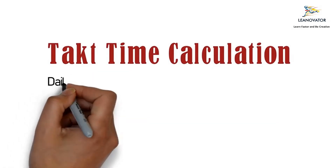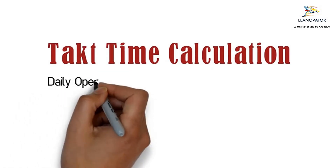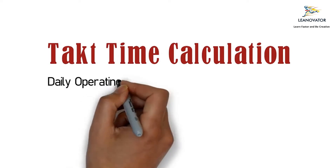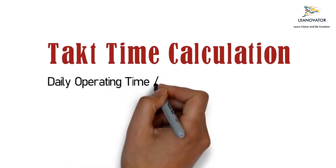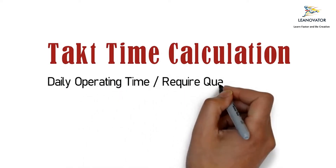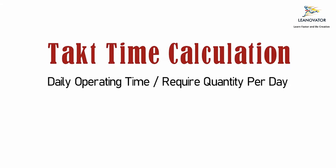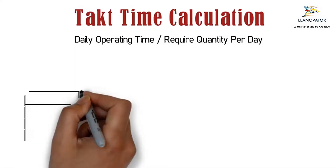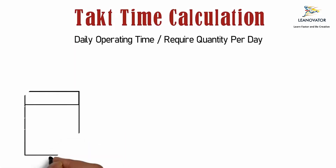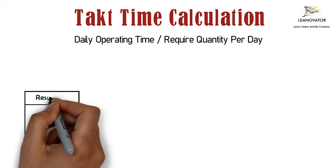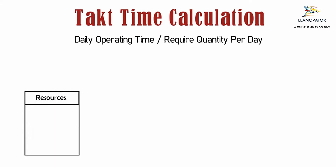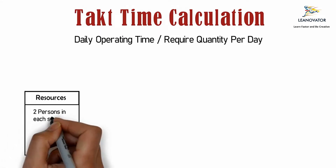The formula to calculate takt time is available time over required units, or customer demand. Takt time allows us to set a baseline in which to set a level and reliable expectation for delivery. It also helps us to balance the available resources — people, machines, and tools — in order to get the job done.